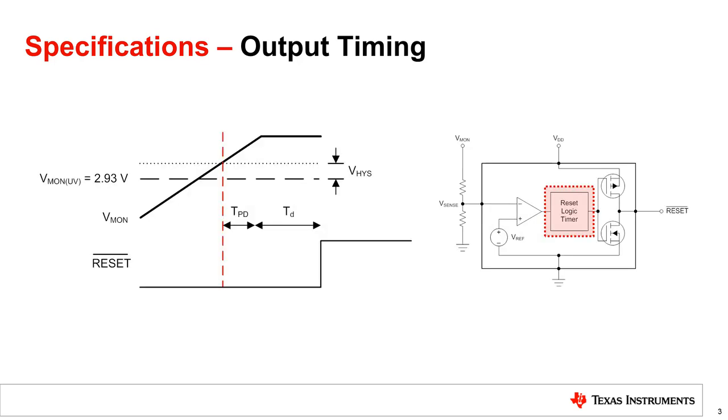For active low supervisors, in addition to the low to high propagation delay, some also have a critical output specification called reset time delay. This specification is only relative to the de-assertion of the reset output when Vmon crosses its positive going threshold voltage and is induced by the reset logic timer within the supervisor. In general, reset time delay is orders of magnitude larger than the propagation delay.